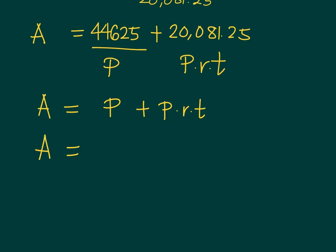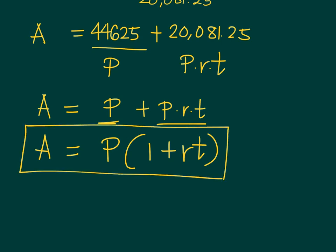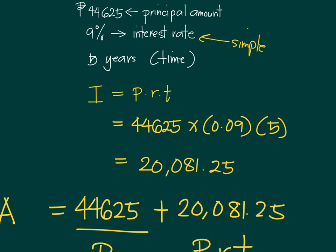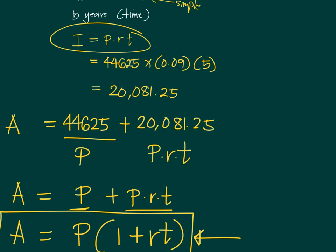This can be simplified as the amount after a period of time equals P times 1 plus RT. You don't need to memorize this formula. All you need to understand is that your money grows by the interest, which is principal times rate times time, and that is added to the principal amount because you gain that interest from your investment.